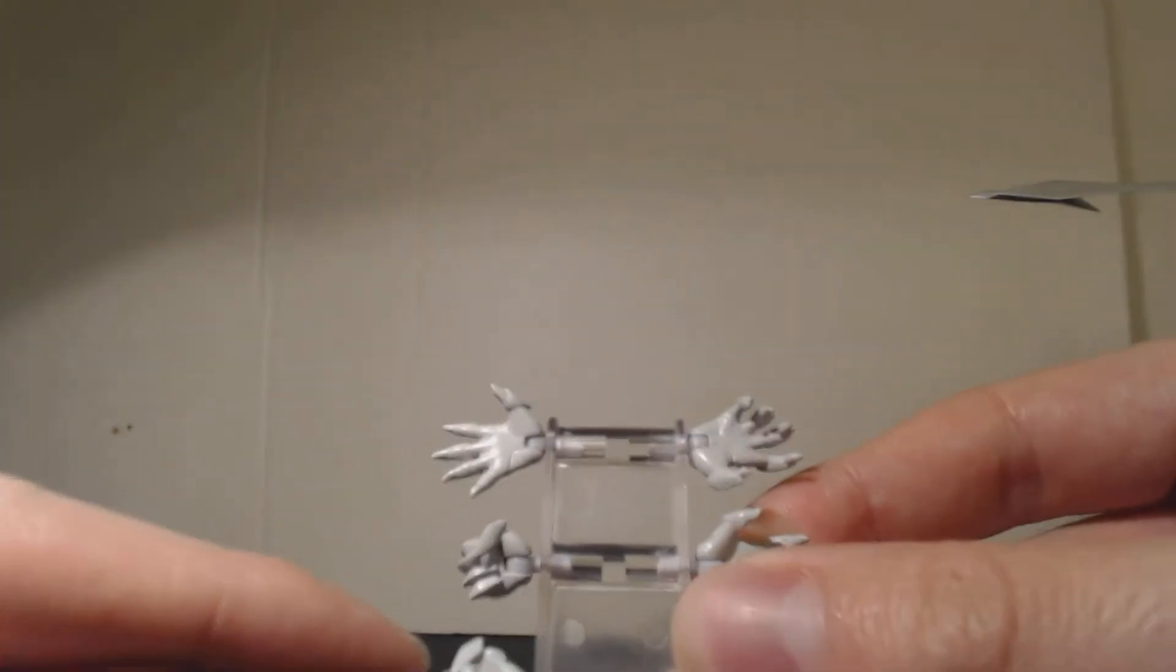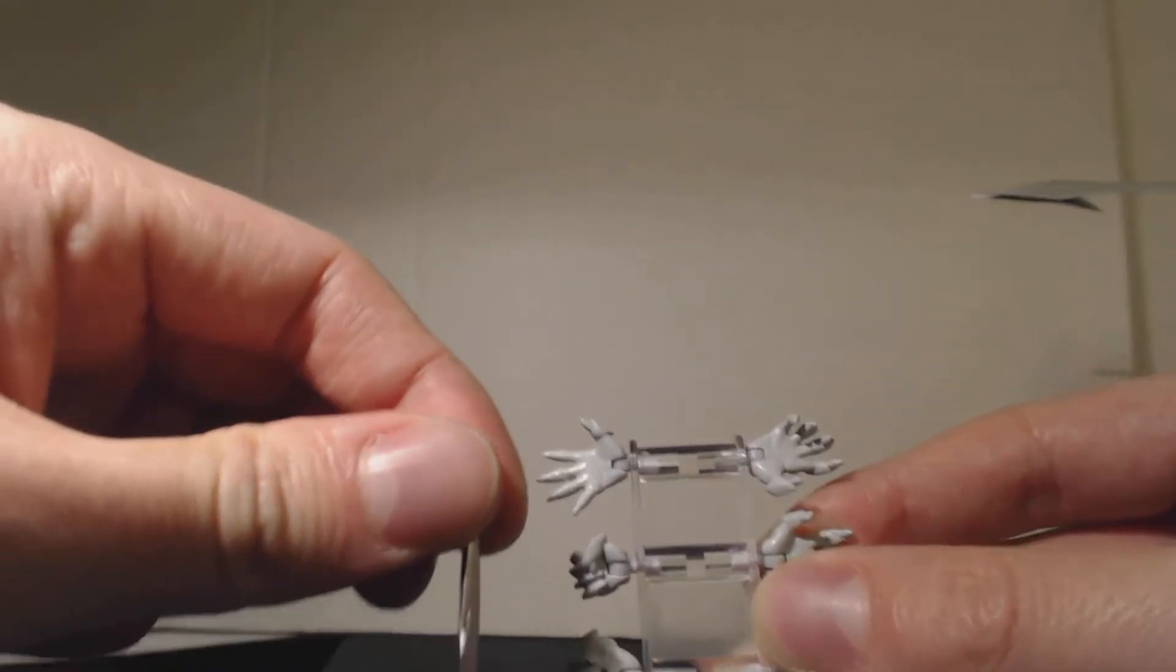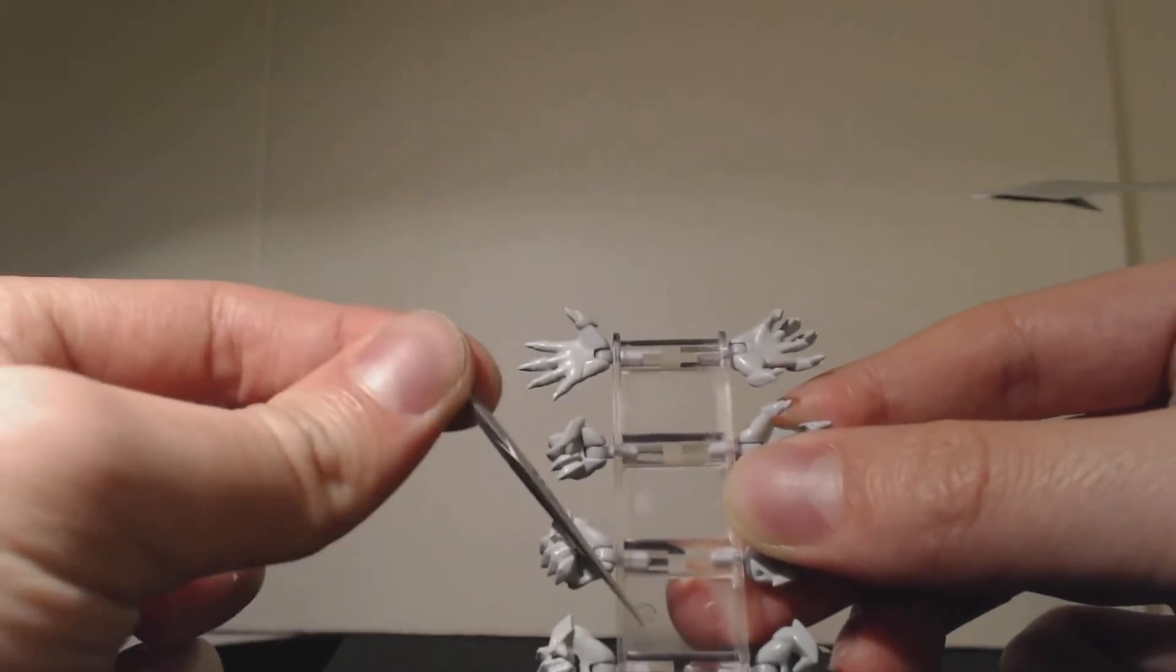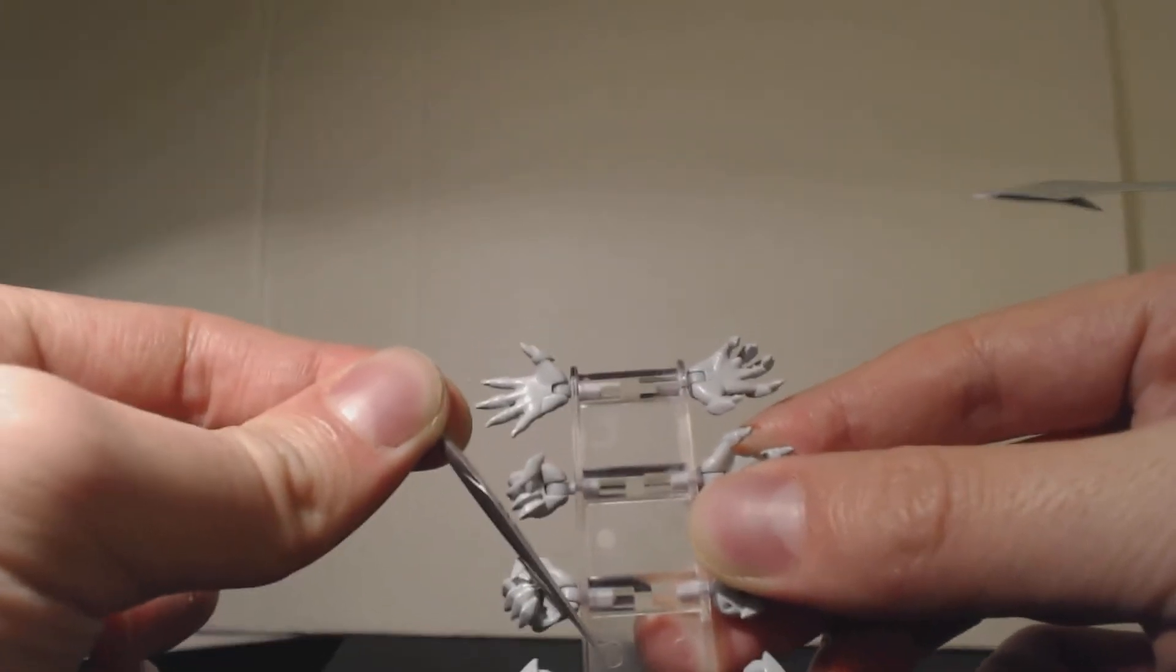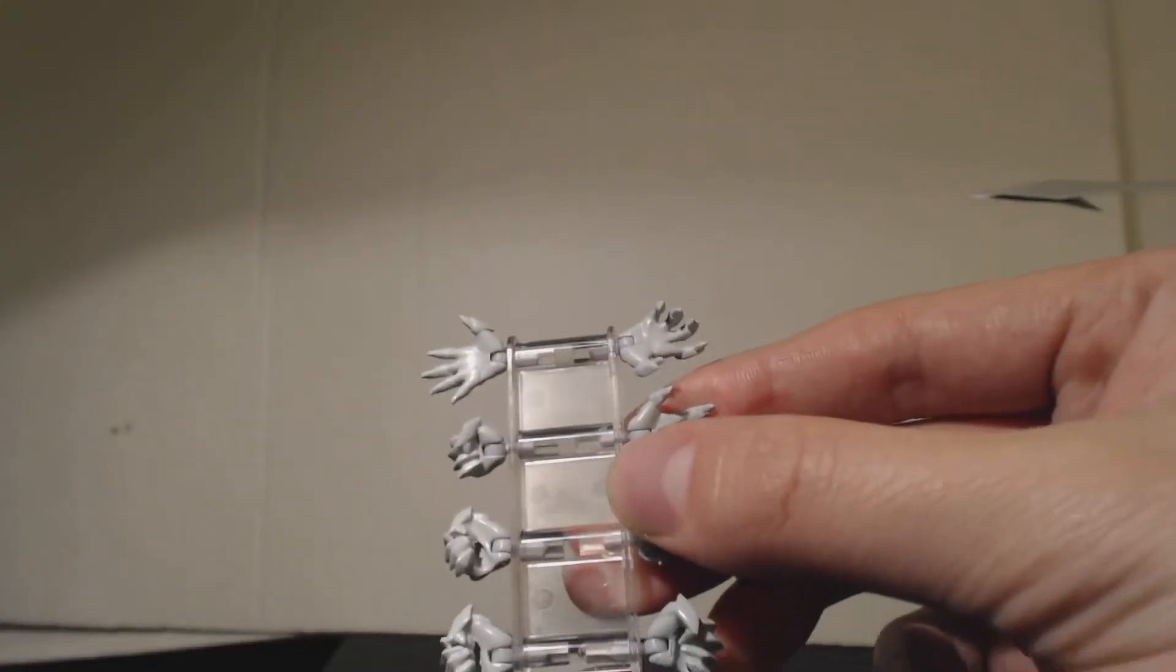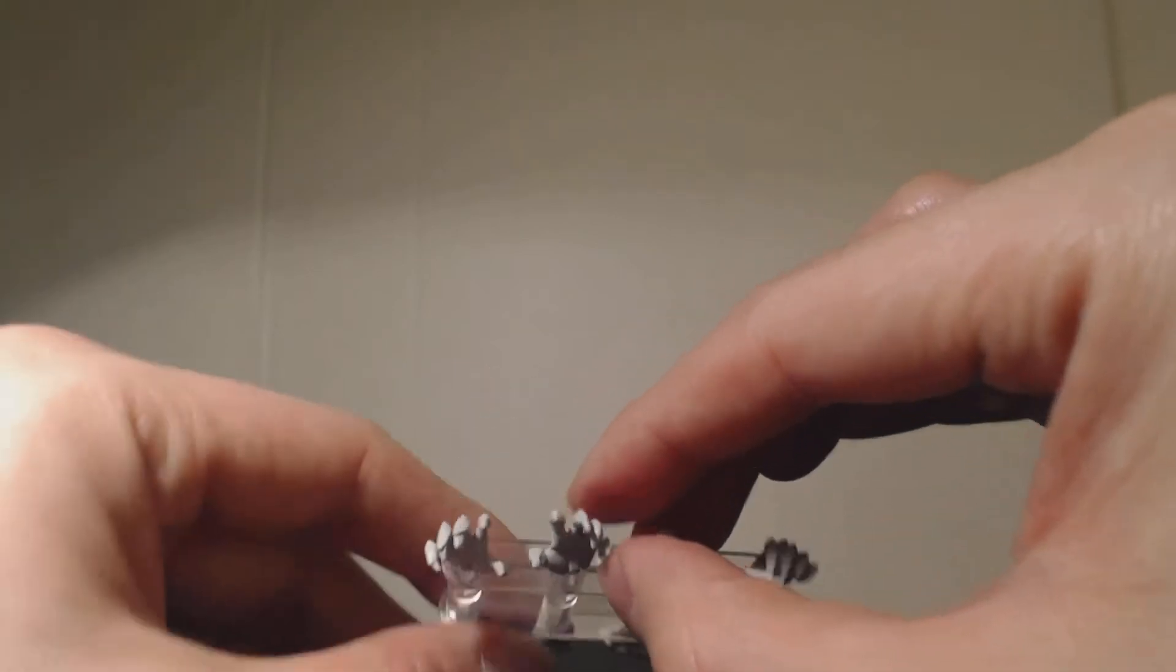And another set of hands here holds the lance slightly angled. So what I mean by that is, instead of going down like that, the groove allows the weapon to be held sideways like so, or slightly sideways. So that gives a little bit more posability to the figure.